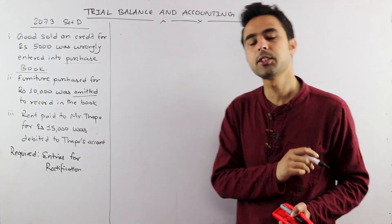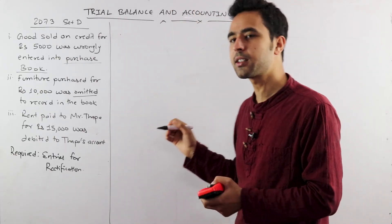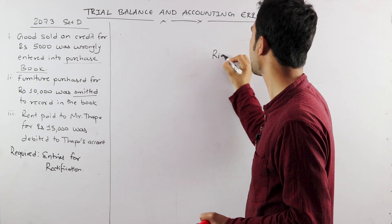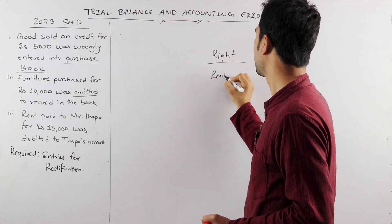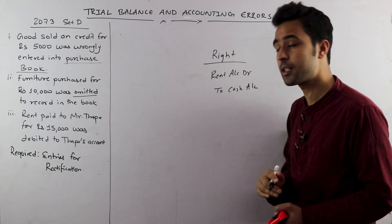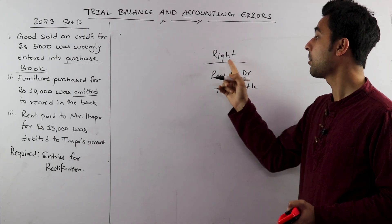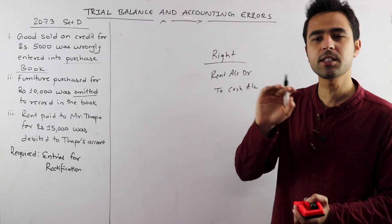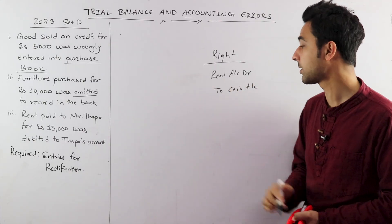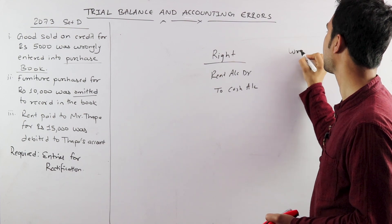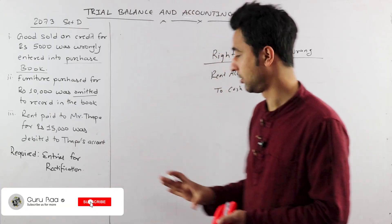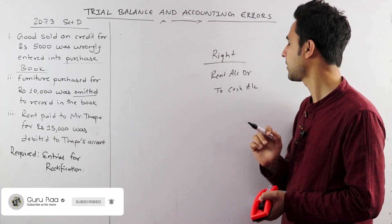Rent paid to Mr. Thapa. Now the right entry: Rent account debit to Cash account — because rent is paid in cash. If your rent account is paid, then you need Rent account debit to Cash. That is the right entry.